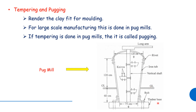The equipment used is a conical iron tube with a diameter of 75 cm to 120 cm. It has a vertical iron shaft with blades. There is also a long arm and a timber base used in this process.